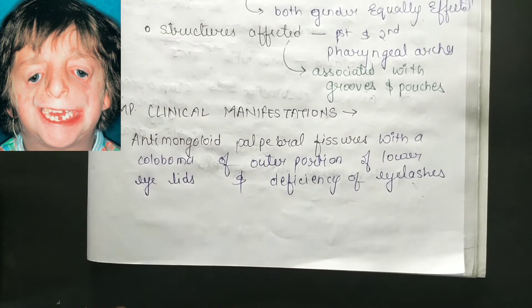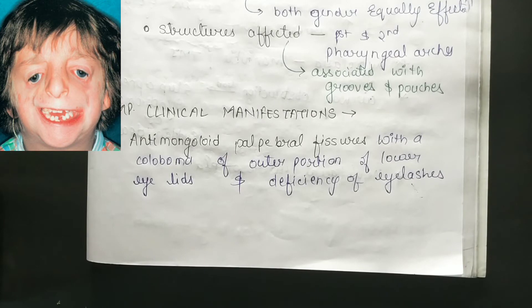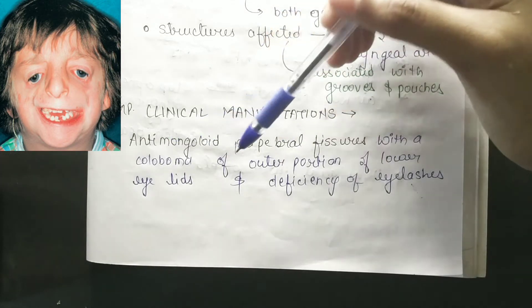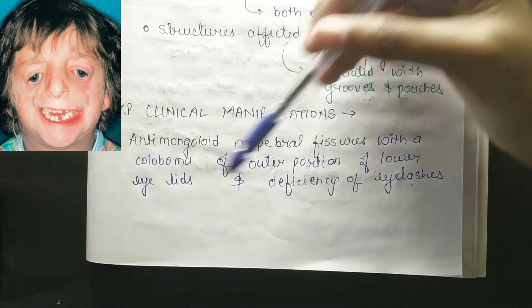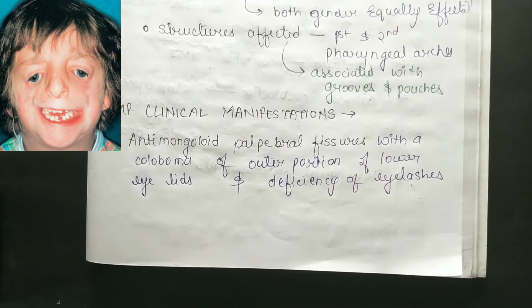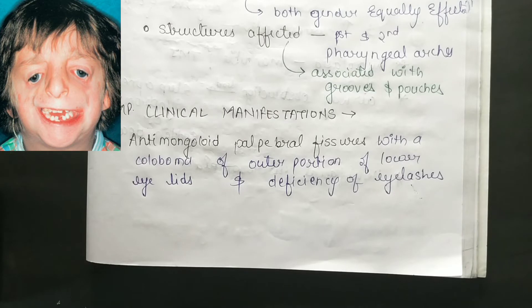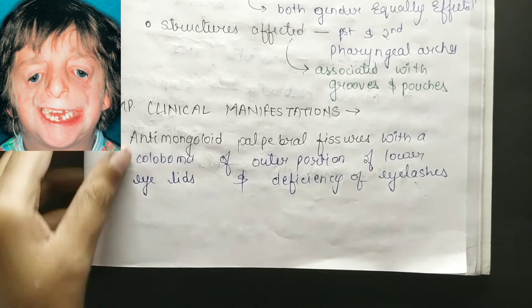Important clinical manifestations include anti-mongoloid palpebral fissures with a coloboma of the outer portion of the lower eyelids, and deficiency of eyelashes.